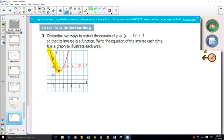So, if we look at the yellow side, does the yellow side now pass the horizontal line test? Yes. So one way to restrict the domain would be just to look at the x values less than or equal to 1.